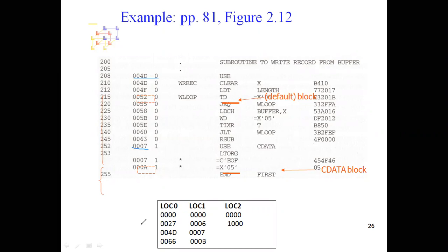Similar to how you generate object code using pass 1 and pass 2 in previous programs, here also we create object code using pass 1 and pass 2. In pass 1, you maintain a separate LOCCTR table for each of the blocks: one for the default block (block 0), one for the CDATA block (block 1), and one for the CBLKS block (block 2).